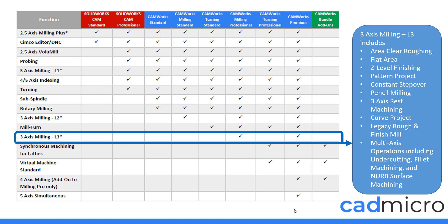Those are all of the different three axis toolpaths included in both SOLIDWORKS CAM and CAMWorks. Please contact CAD Micro if you have any questions regarding these packages.